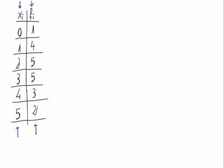Having a look at the table, the highest f sub i is 5, which appears with 2 and 3. So we would have two modes: 2 and 3 for this statistic distribution. And that means that we have a bimodal statistic distribution.